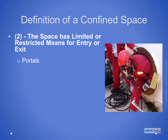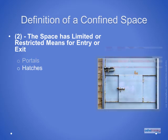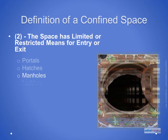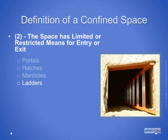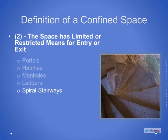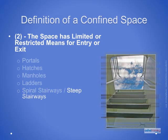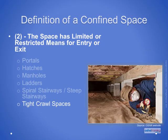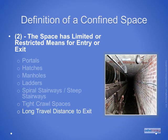Examples of where a limited or restricted means of entry or exit exists include: portals where the entrant must squeeze through horizontally or vertically; hatches of a size or location requiring the entrant to climb or squeeze through; manholes the entrant must pass through; and entryways where the worker must climb a ladder to enter or exit. Additional examples include spiral staircases, steep stairways such as ship ladders, tight crawl spaces beneath equipment, under floors, between walls, and above some ceilings, and long tunnels where workers must travel a long distance to reach the nearest exit.